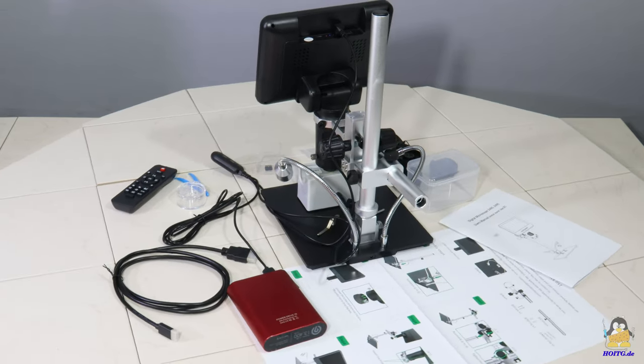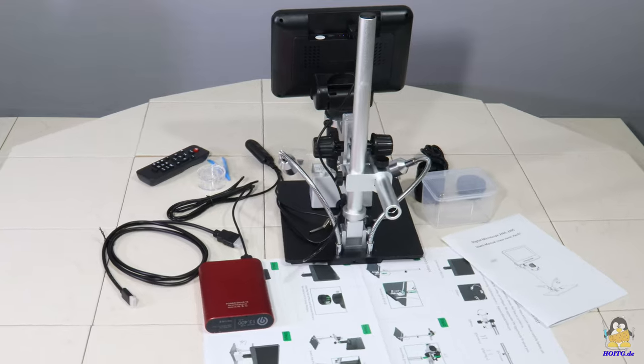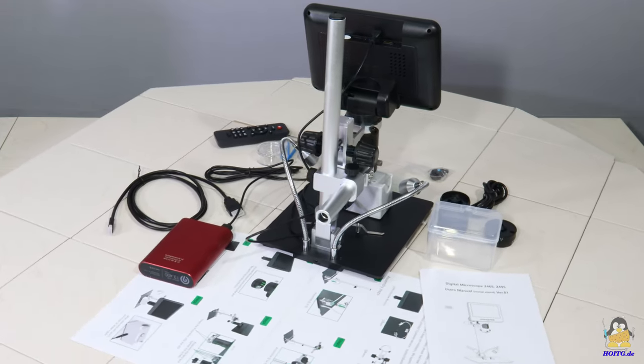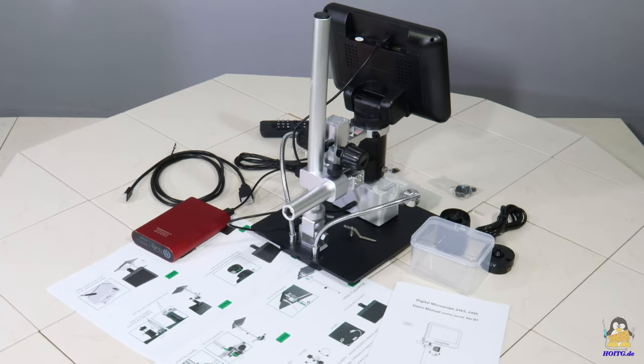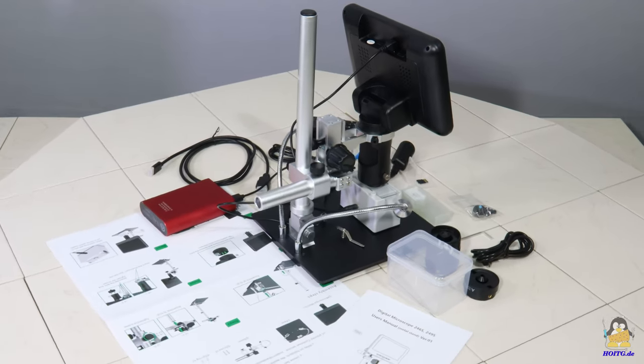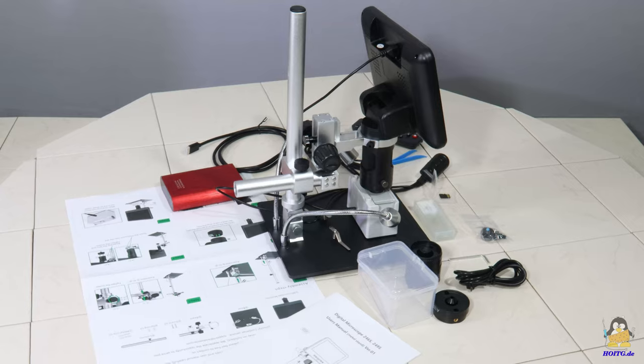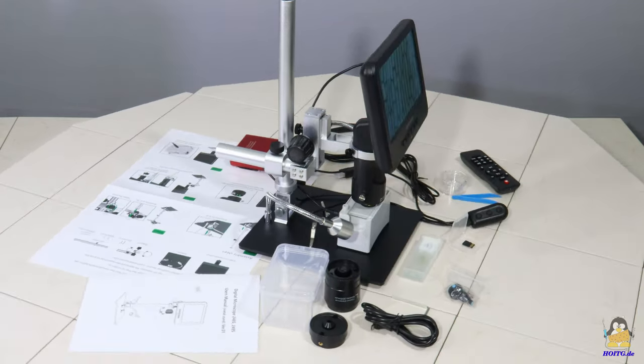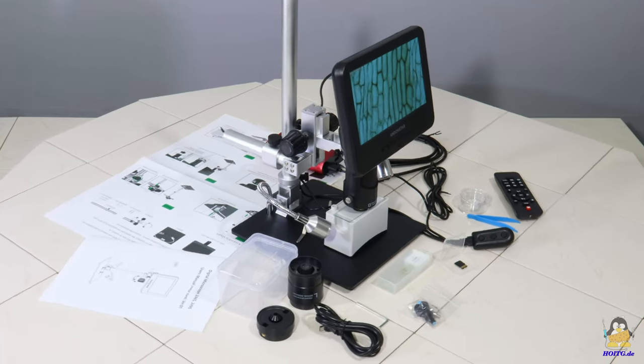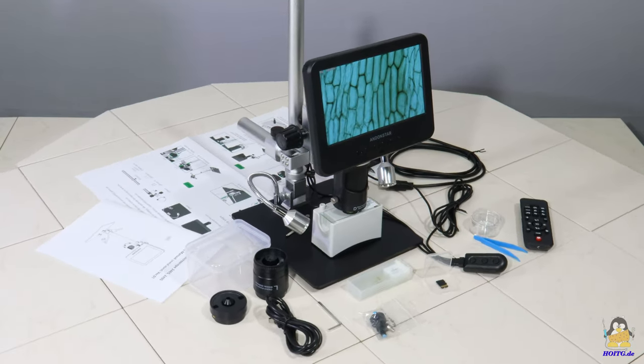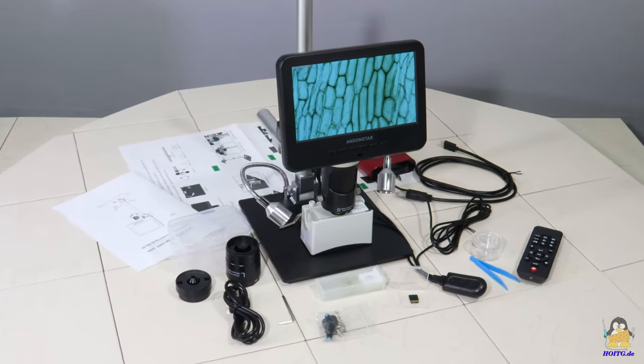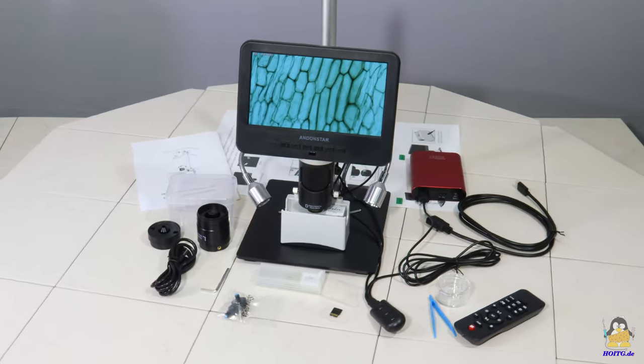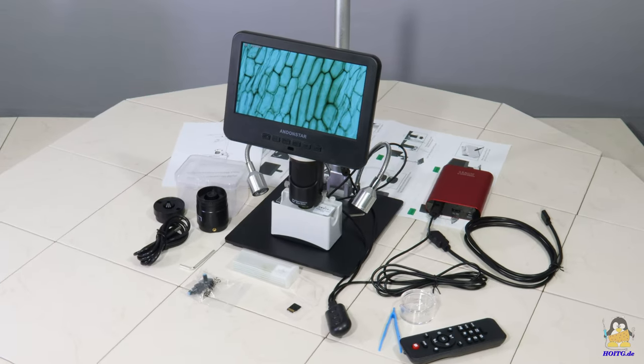I received a microscope type AD246S from the company AndonStar. Two things made a lasting impression on me from an early age: magnets and optical lenses, so I gladly accepted the offer to test the microscope. In addition to the microscope, the package includes a 7 inch screen, a total of three different lenses, light sources for reflective and transmittive microscopy, a couple of slides with sample preparations and some small parts.